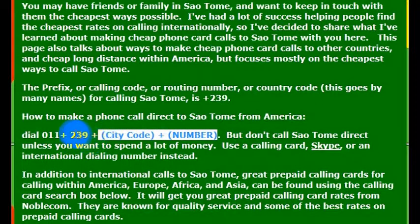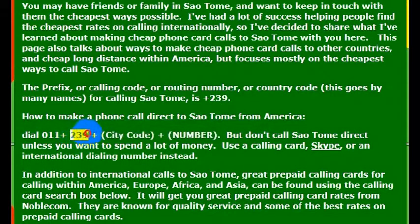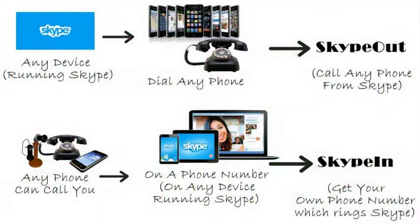Again, the country code for São Tomé is 239. But I wouldn't really recommend calling direct — your phone company will charge you a lot of money. If you want to call a phone number, I really recommend using Skype. We detail how to make free and low-cost calls using Skype in other videos.